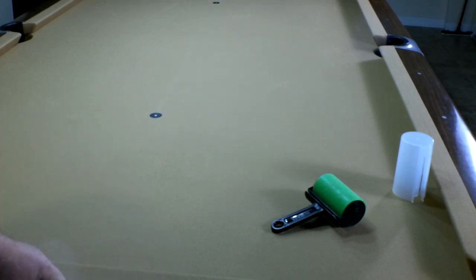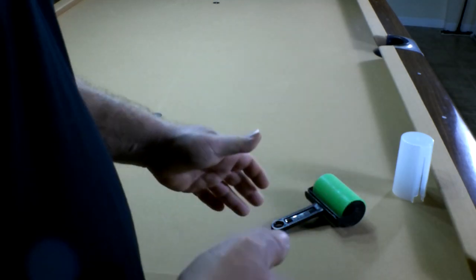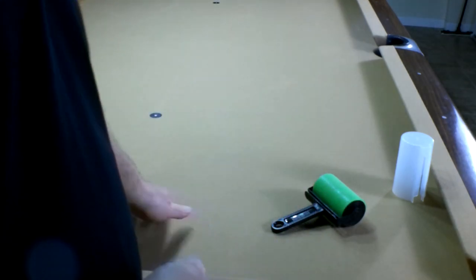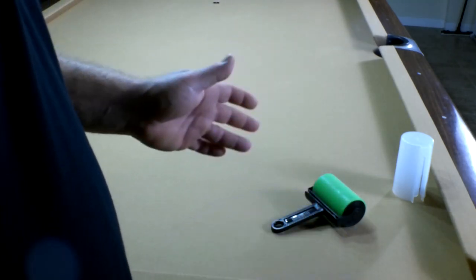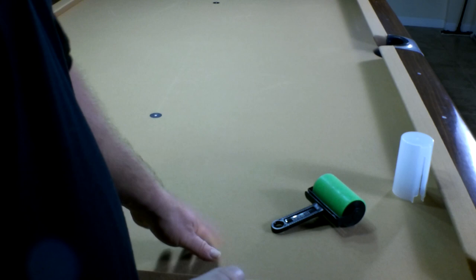So me personally, at least once if not twice a week, I take a good vacuum with a soft bristle brush attachment and vacuum my table and my rails. That is probably the ultimate way to clean your felt and to keep your playing surface in great condition.